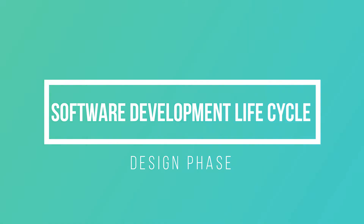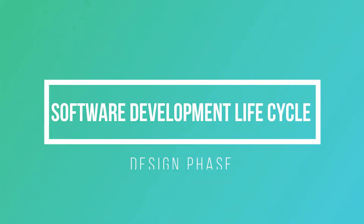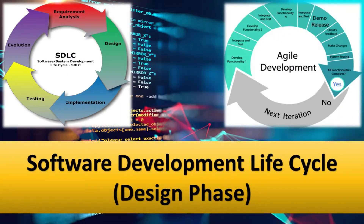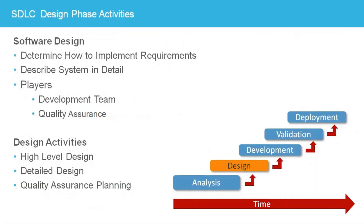The SDLC design phase is where the development team determines how to implement the software to satisfy the requirements. This is the phase where the application is broken down into small objects, components, and modules, which are described in detail, so much so that a skilled team of developers and engineers could build the application based on the design. The design phase is where the requirements specifying what the system must do are translated into the design, which specifies how the system will be implemented.